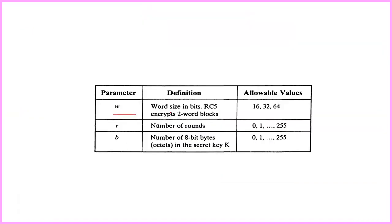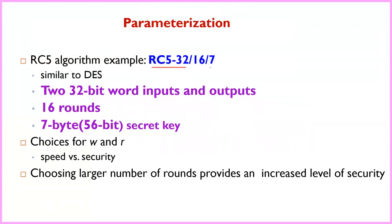The parameter W is the word size in bits. Allowable values are 16, 32, and 64. R denotes the number of rounds, with allowable values from 0 to 255 — a variable round count is one of the advantages of RC5. B is the key length in bytes, with allowable values from 0 to 255. An example similar to DES uses two 32-bit input words, processes them, and produces two 32-bit output words using 16 rounds and a secret key.